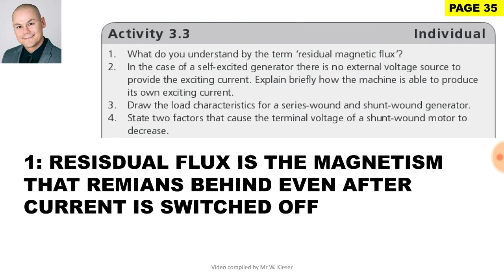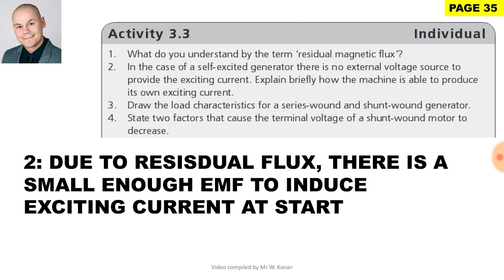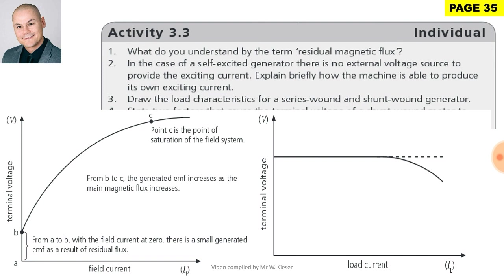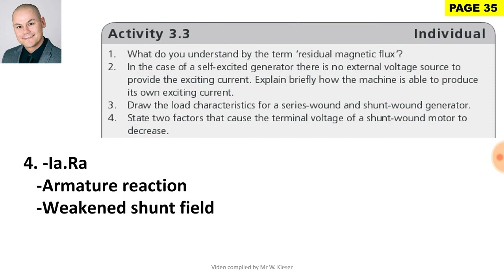Activity 3.3. Question 1: What do you understand by the term residual magnetic flux? Residual flux is the magnetism that remains behind even after the current is switched off. Question 2: In a self-excited generator, there is no external voltage source. Due to residual flux, there is a small enough EMF to induce exciting current at start. Question 3: Draw load characteristic curves — series-wound is a rising load characteristic; shunt-wound is a drooping load characteristic. Question 4: Two factors causing terminal voltage of a shunt-wound motor to decrease are IARA (armature reaction) and weakened shunt field.